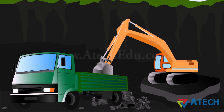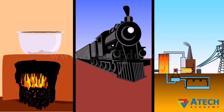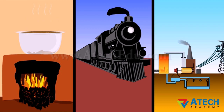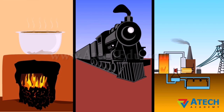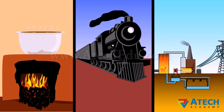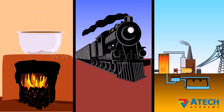Coal is the most abundant fossil fuel in the whole world. Coal is often used as a fuel to cook food. Earlier, it was used in railway engines to produce steam to run the engines. It is also used in various industries. It is used in thermal power plants to produce electricity.